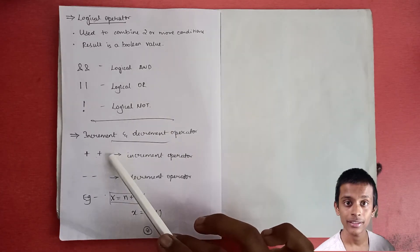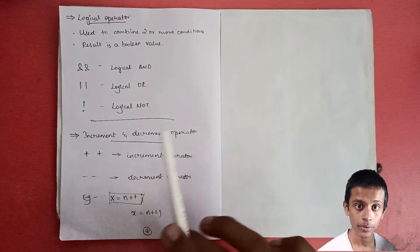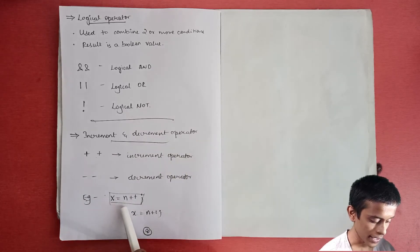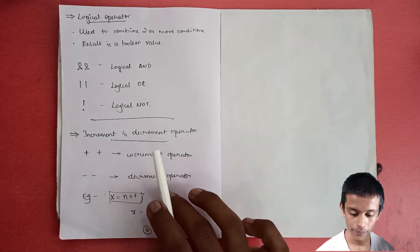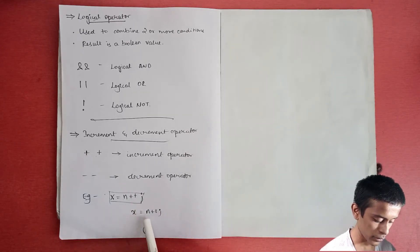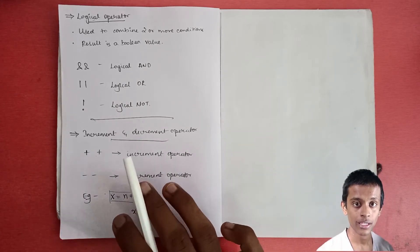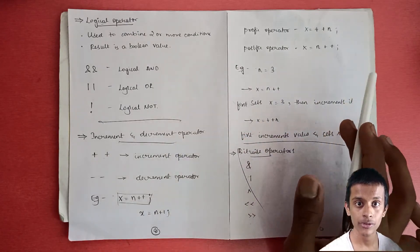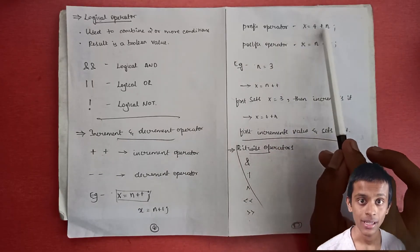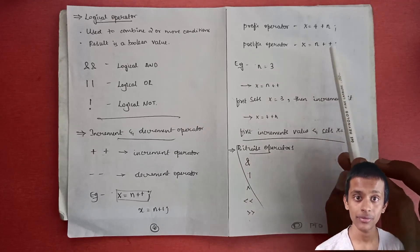Now let's see the increment and decrement operators: '++' and '--'. '++' is the increment operator and '--' is the decrement operator. For example, 'x = n++' — this adds one to the value, same as 'x = n + 1', but using 'n++' is more convenient. This operator can be used either as a prefix operator or a postfix operator. Prefix is written as 'x = ++n' (before the variable), and postfix is written as 'x = n++' (after the variable).